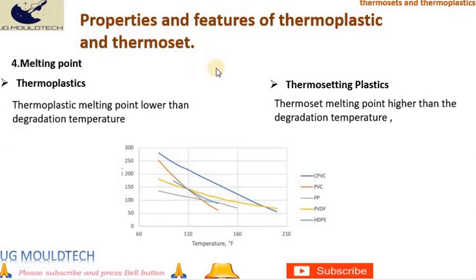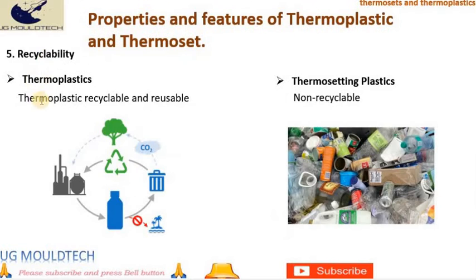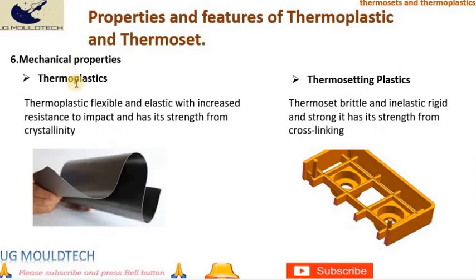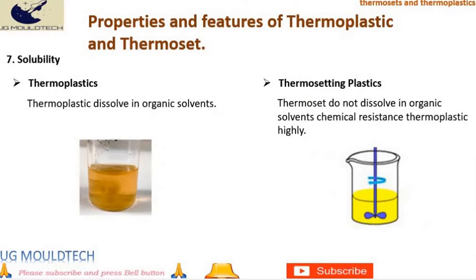4. Melting point — thermoplastics have a melting point lower than their degradation temperature; thermosets have a melting point higher than their degradation temperature. 5. Recyclability — thermoplastics are recyclable and reusable; thermosets are non-recyclable. 6. Mechanical properties — thermoplastics are flexible and elastic with increased resistance to impact, deriving strength from crystallinity; thermosets are brittle, inelastic, rigid and strong, deriving strength from crosslinking.